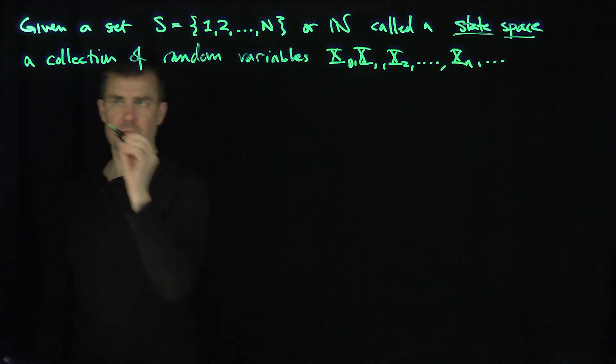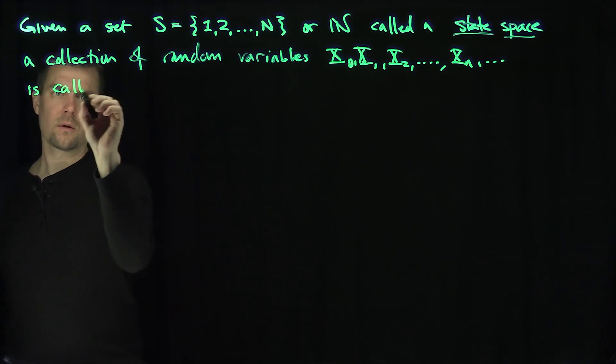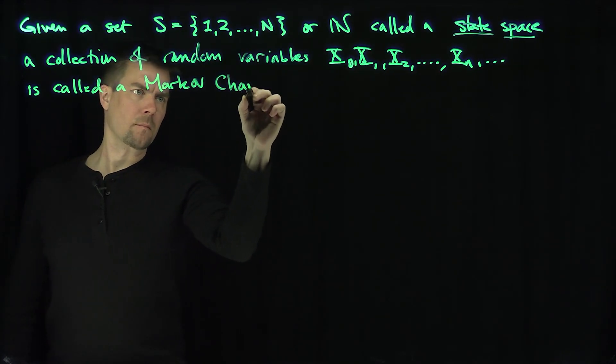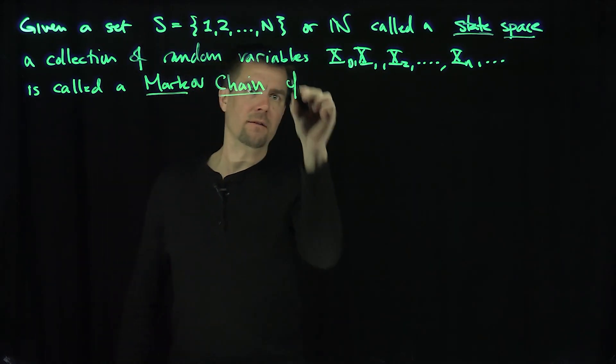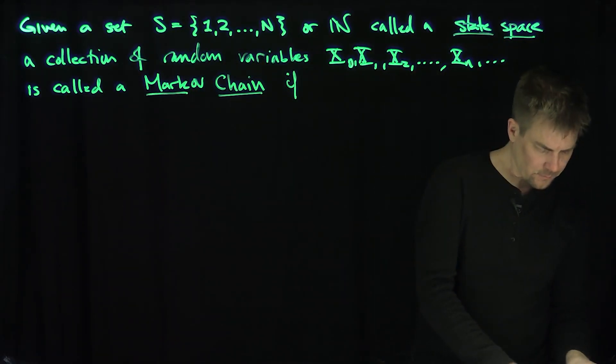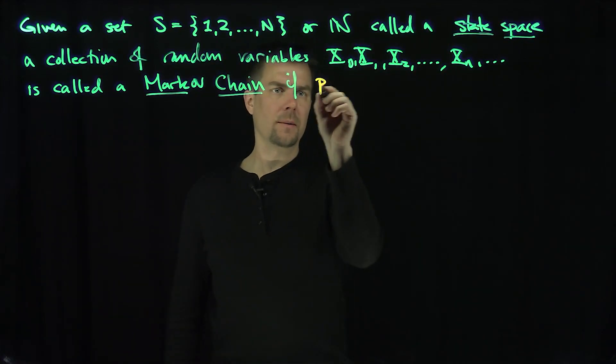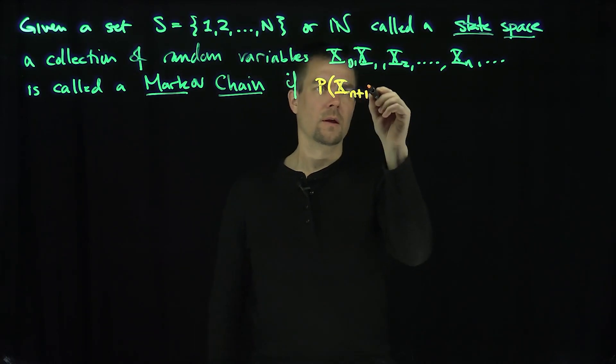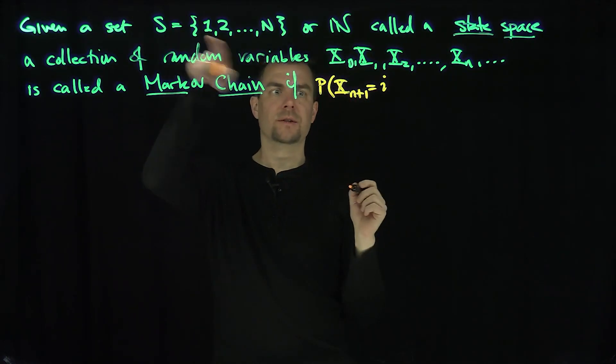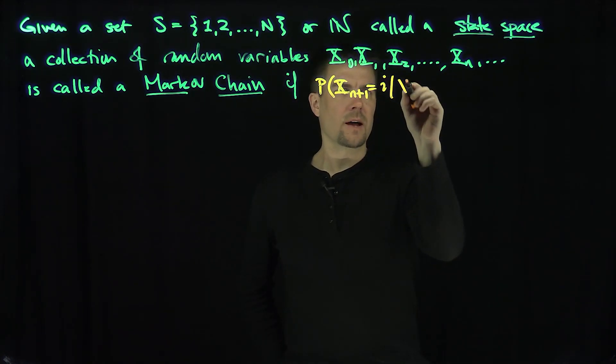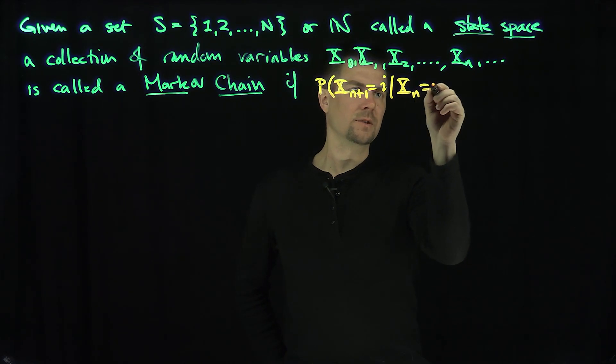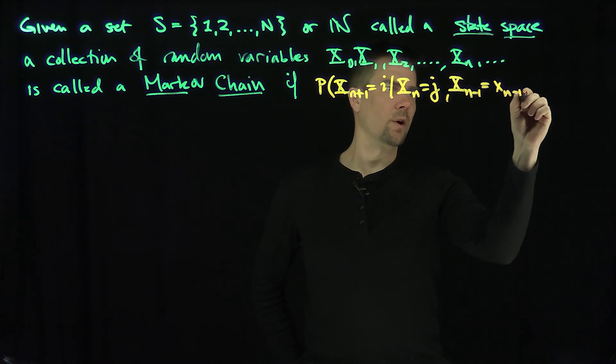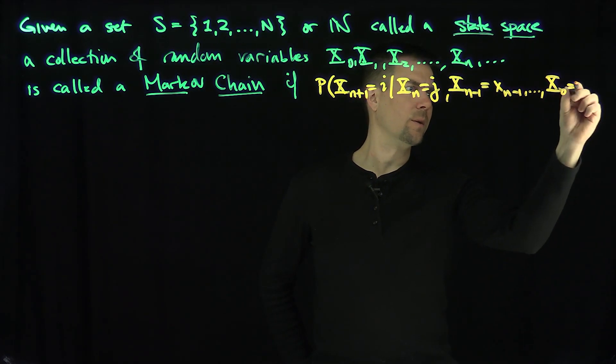is called a Markov chain if the following condition is satisfied. If the probability that x_n+1 equals i, where i is in this state space, given that x_n equals j, x_n-1 equals x_n-1, all the way down to x_0 is some number x_0.